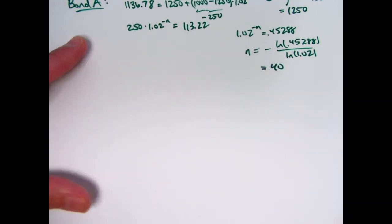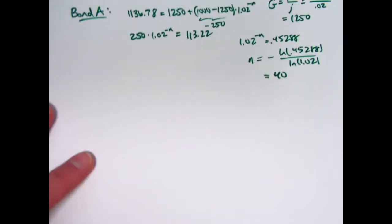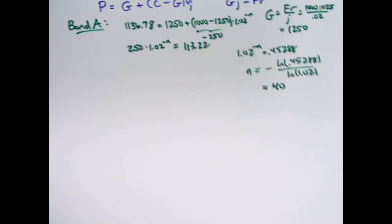So 40 half years, that means the term is 20 years. And I will need that now to solve for the price of bond B.